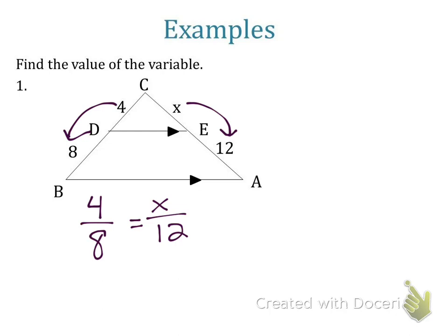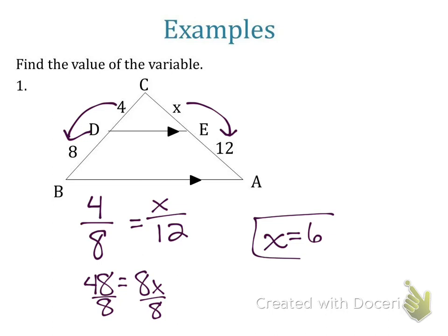Now we're going to cross multiply and divide. We divide both sides by 8, and that missing side is going to be 6 — 6 inches, 6 feet, whatever units we're working with.